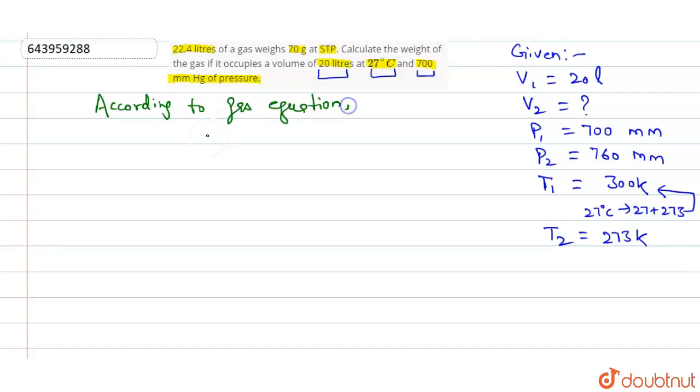What is the equation here? P1 V1 upon T1 is equal to P2 V2 upon T2. Okay, so we'll start putting the values into the equation. What is P1? P1 is 700. V1 is 20 liter.